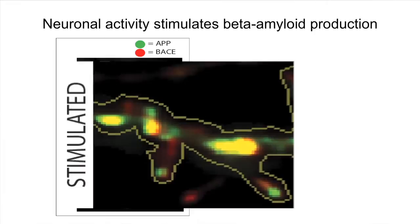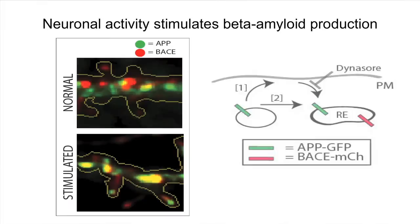In the image below, you can see that there is more yellow as the APP and BACE vesicles have converged. We also did further experiments that helped define the basic pathway by which APP and BACE seem to converge, as shown on the right.